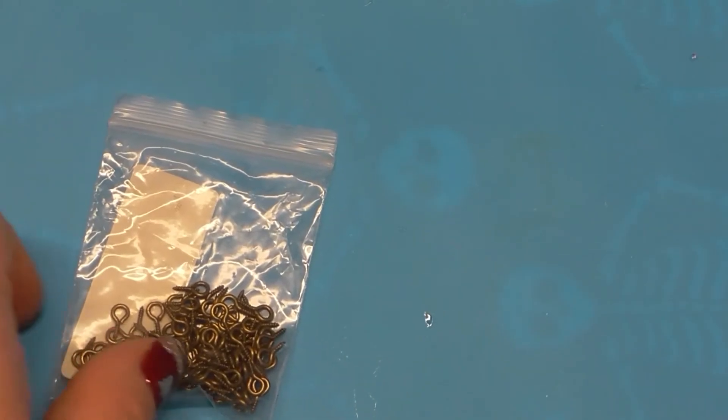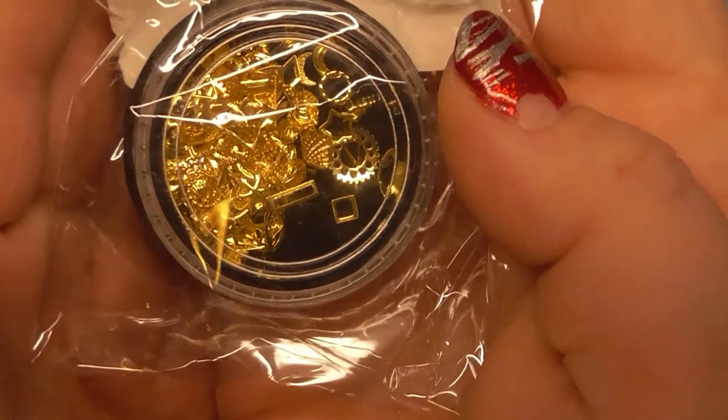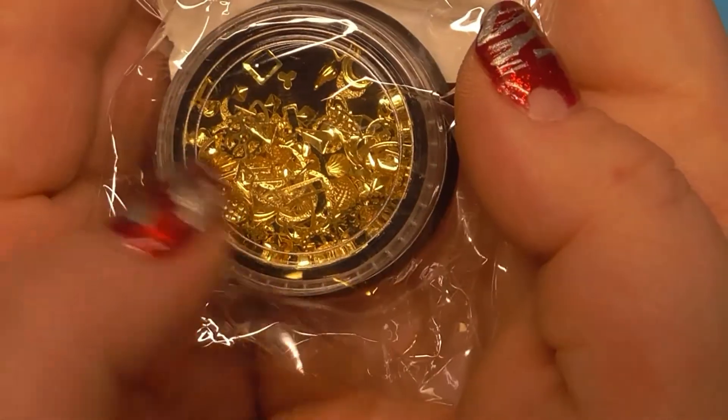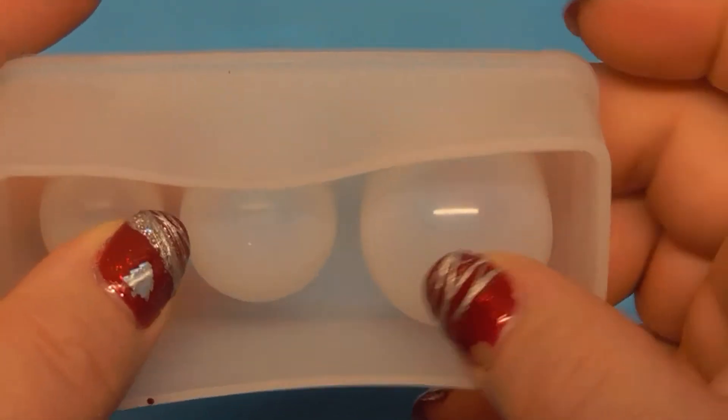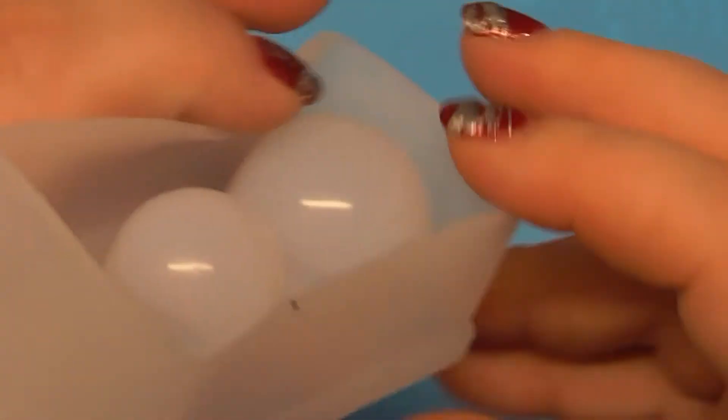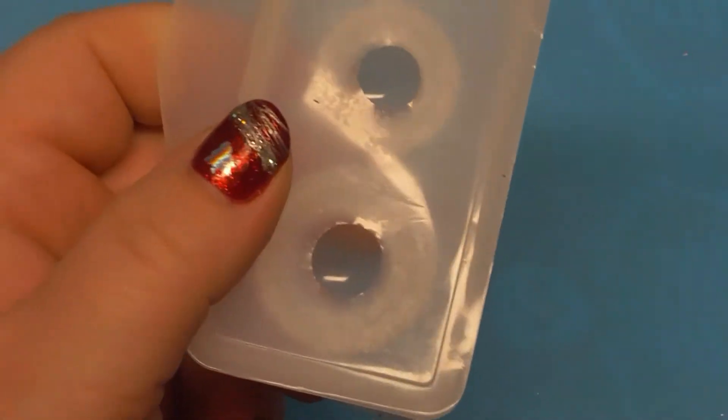I have some more of these eye screws. I got some of these gold metal findings with shells and moons and fun little things. I got this mold that makes kind of like an oval shaped pendant looking thing.